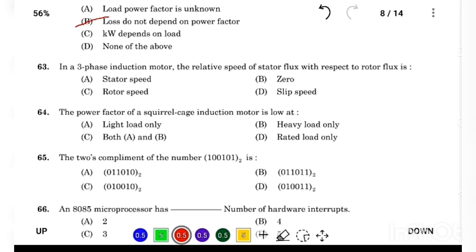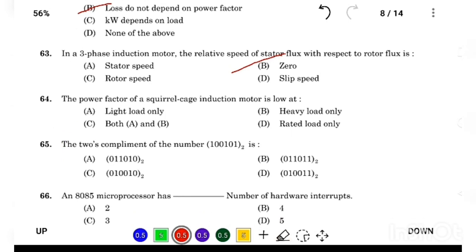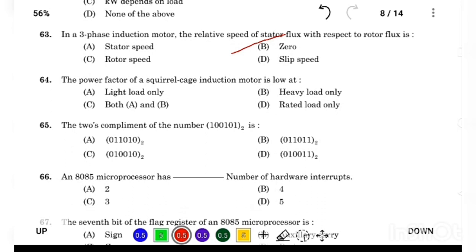In a three-phase induction motor, the relative speed of stator flux with respect to rotor flux is Answer Option B, 0. The power factor of a squirrel cage induction motor is low at Answer Option A, light load only.